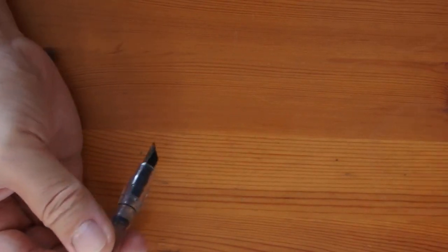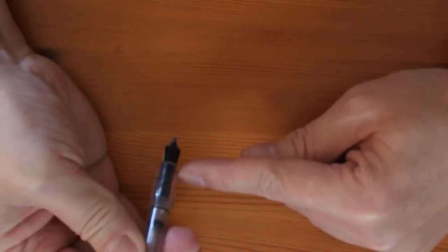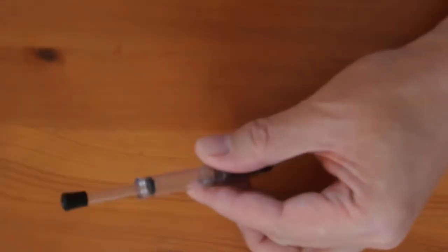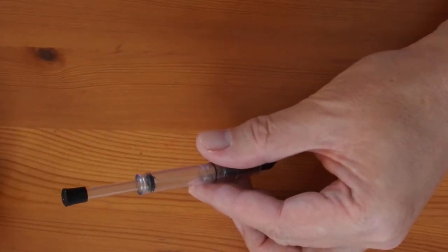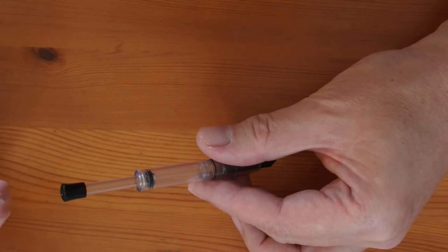To fill the pen, dip it into your ink bottle till the front of the section is submerged, and then pull back the piston rod. You need to repeat it once or twice in order to make sure that you've got a good fill.